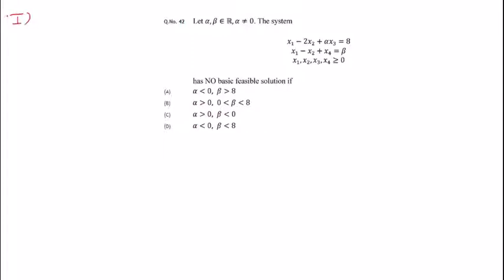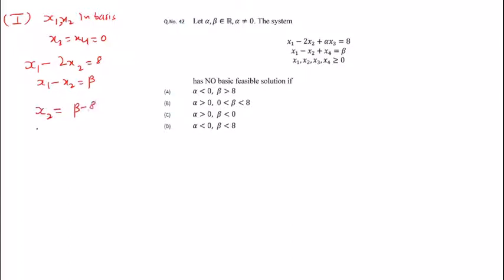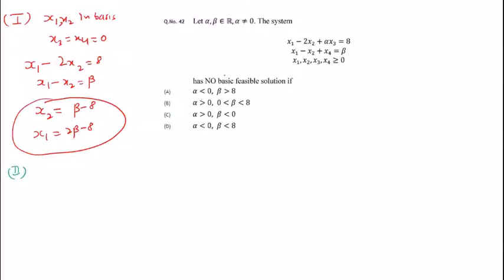For the first basic solution, I put x1 and x2 in the basis, setting x3 and x4 equal to zero. This gives the system x1 - x2 = beta. Solving this 2×2 system, we get x2 = beta - 8 and x1 = 2*beta - 8. Since these are in terms of beta, we cannot comment on feasibility yet. We need every basic solution to be infeasible for the answer condition to hold.